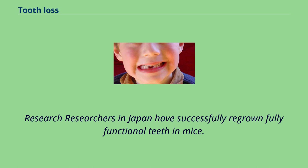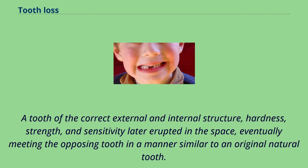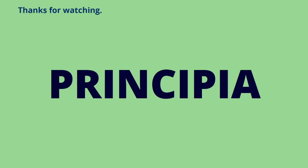Researchers in Japan have successfully regrown fully functional teeth in mice. Epithelial and mesenchymal cells were extracted from the mice, cultured to produce a tooth germ, and the germ was then implanted into the bone at the space of a missing tooth. A tooth of the correct external and internal structure, hardness, strength, and sensitivity later erupted in the space, eventually meeting the opposing tooth in a manner similar to an original natural tooth. This technique may be a possible future treatment for replacement of missing teeth.